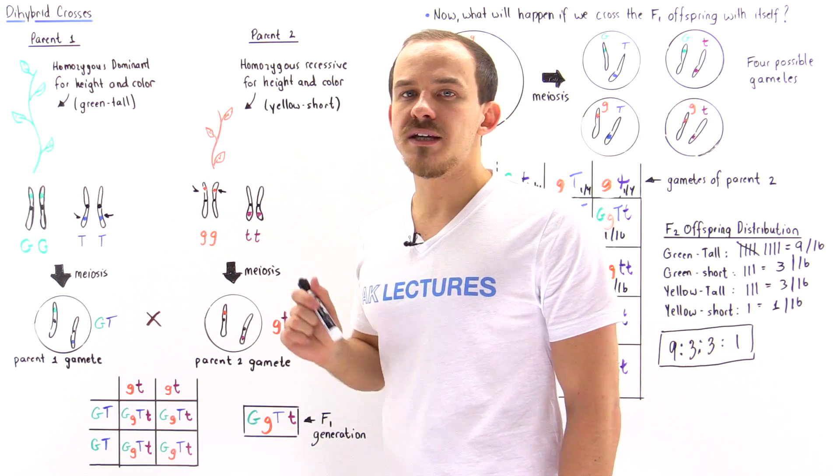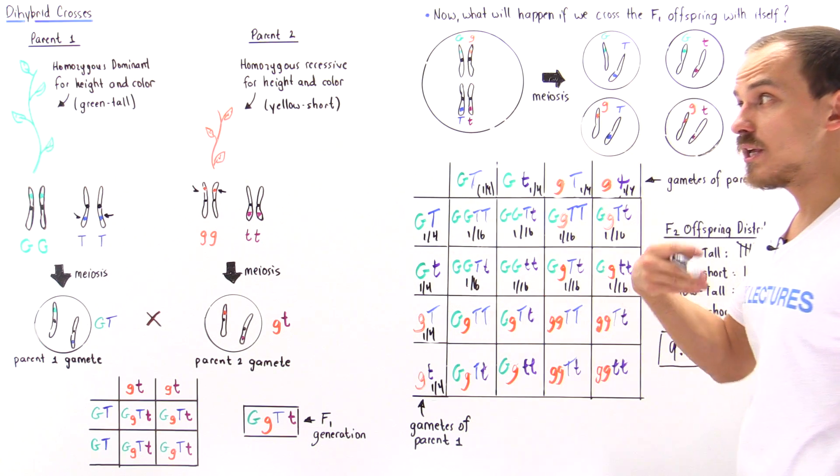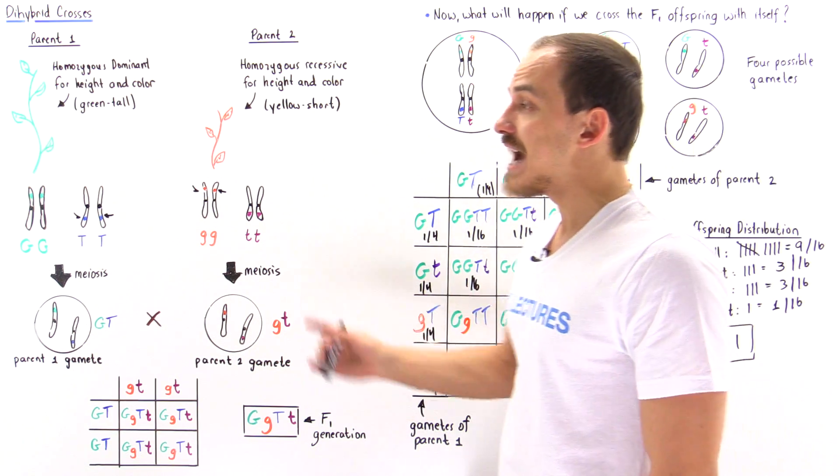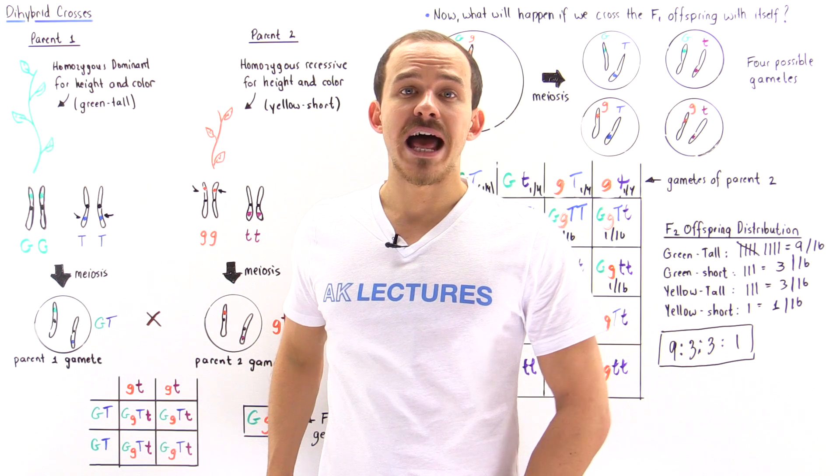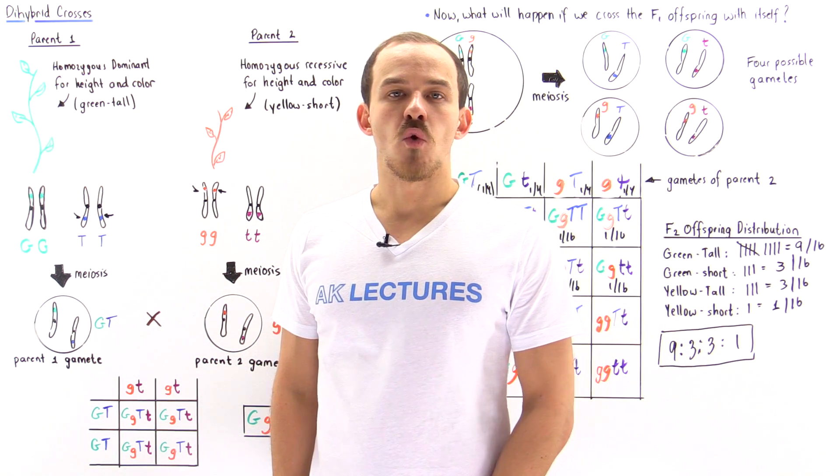So this is what we mean by dihybrid cross. A dihybrid cross is simply a cross in which we're considering not one but two different traits for that individual, for that plant or for that organism.